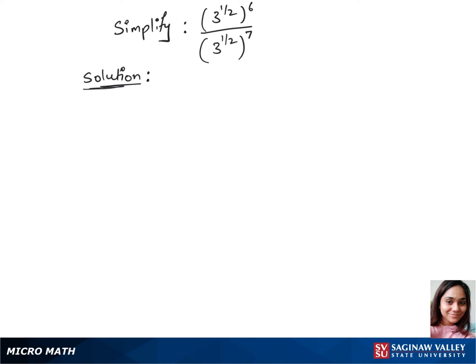To simplify this question we will use a few exponent rules. Let's use Rule 1 to write our first step, which is 3 to the power 1 over 2 times 6, over 3 to the power 1 over 2 times 7.